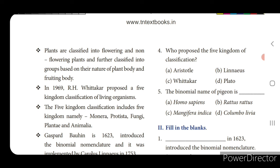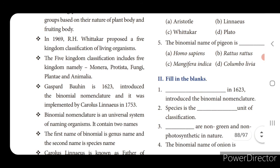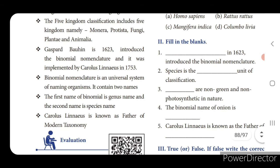In 1969, R. H. Whittaker proposed a five kingdom classification of living organisms. The five kingdoms are: Monera, Protista, Fungi, Plantae and Animalia. Gaspard Bauhin in 1623 introduced binomial nomenclature and it was implemented by Carolus Linnaeus in 1753. Binomial nomenclature is a universal system of naming organisms; it contains two names - the first is the genus name and the second is the species name. Carolus Linnaeus is known as the father of modern taxonomy.